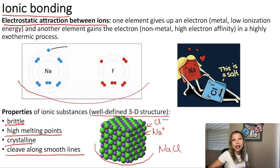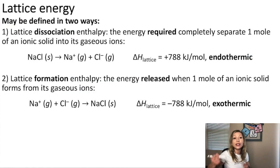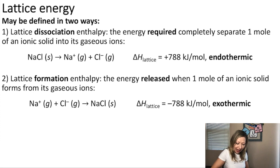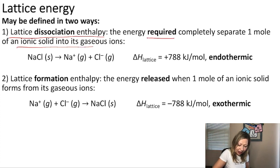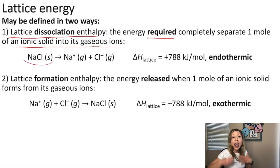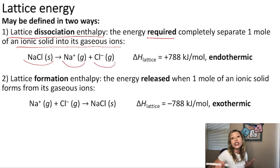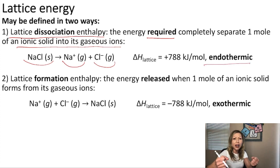But why are they so stable? This is due to the so-called lattice energy, which can be defined in two ways. The first way is the lattice dissociation enthalpy — how much energy is required to completely separate one mole of an ionic solid into its gaseous ions. So if we have one mole of NaCl solid, how much energy do we need to put in to make Na+ and Cl-? This process is going to be endothermic, meaning we are going to put in a lot of energy to separate those ions from each other.